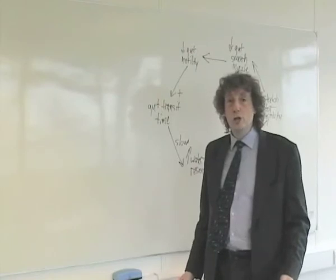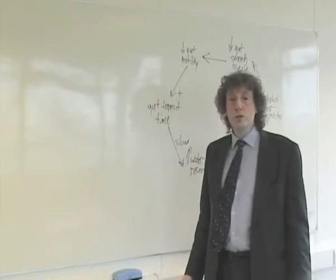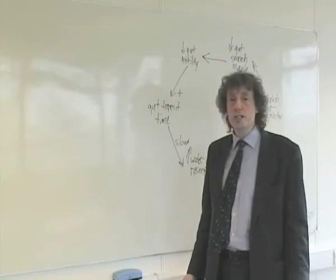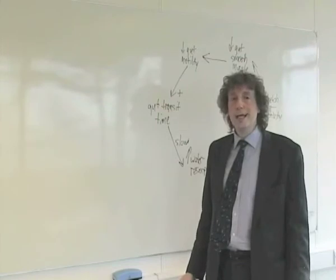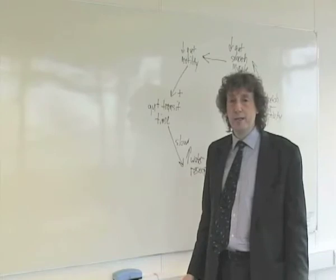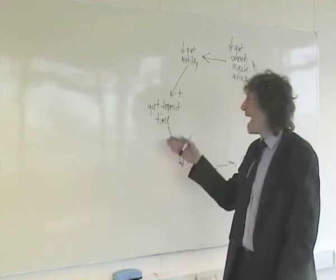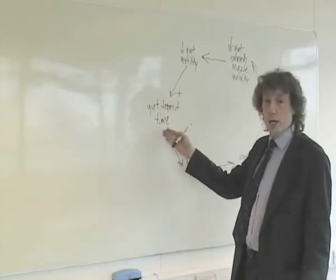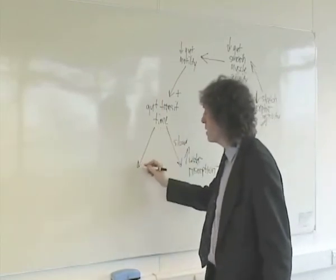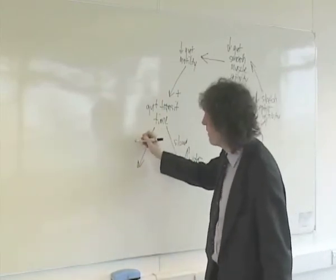Having shown how slowing gut transit time can lead to constipation via a positive feedback loop, we now approach the second part of the question: how adding fiber to the diet can lead to a regularization of gut transit time via a negative feedback loop. We begin again at our initial parameter — gut transit time — and in this case we're going to make our perturbation via fiber.